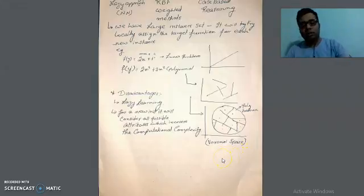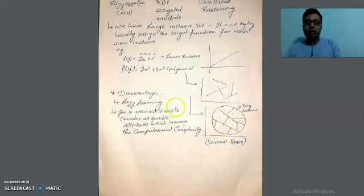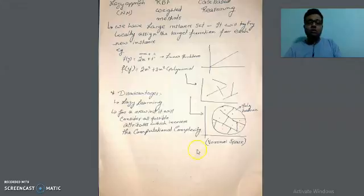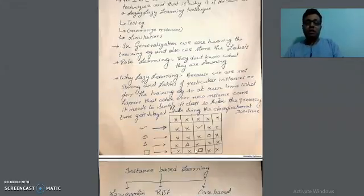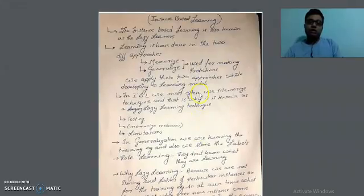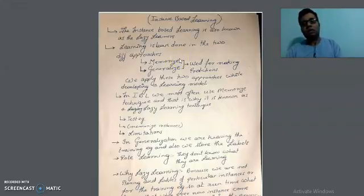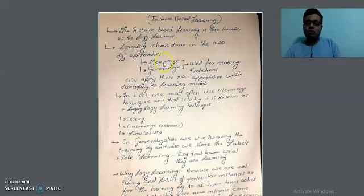There are some disadvantages associated with instance-based learning. When we use this type of learning, we face time complexity, computational complexity, runtime errors, and sometimes the algorithm hangs. These are the several problems or disadvantages we face in instance-based learning. In our next class, we will discuss a few algorithms based on instance-based learning: first is the KNN algorithm, second is locally weighted regression, and the third is the case-based learning algorithm. We will discuss each algorithm one by one. Thank you for now.